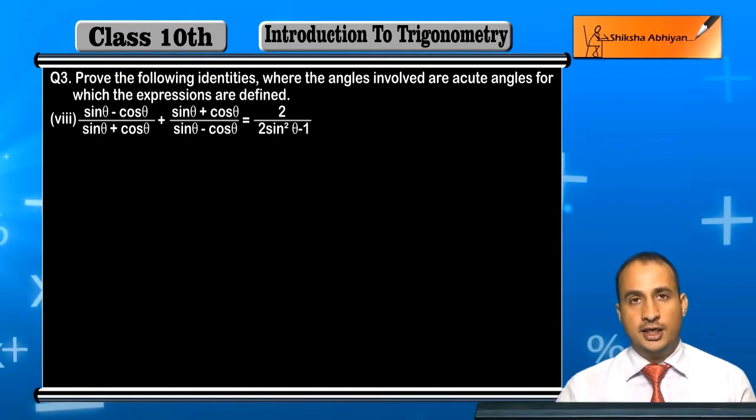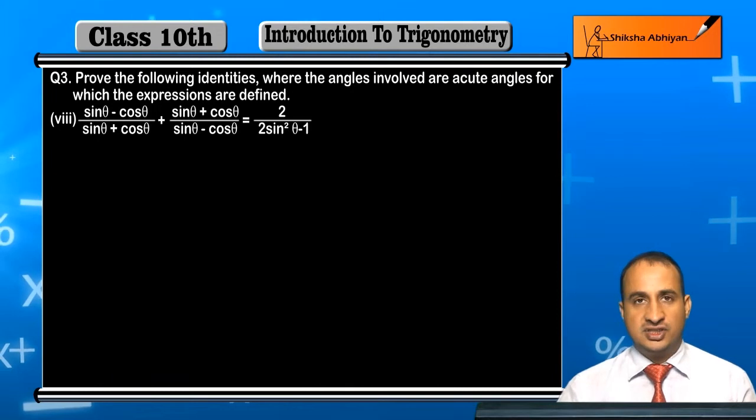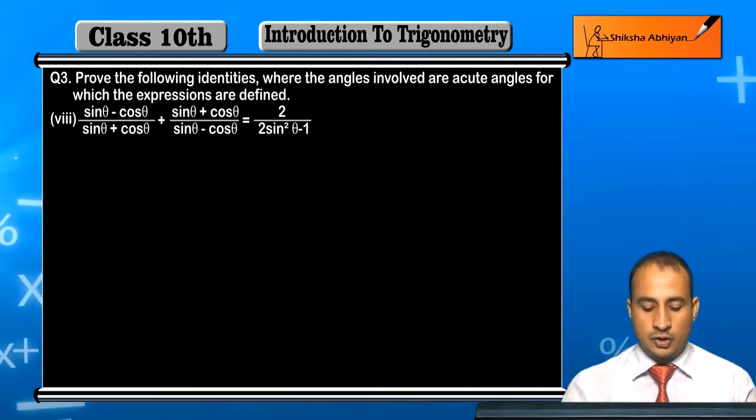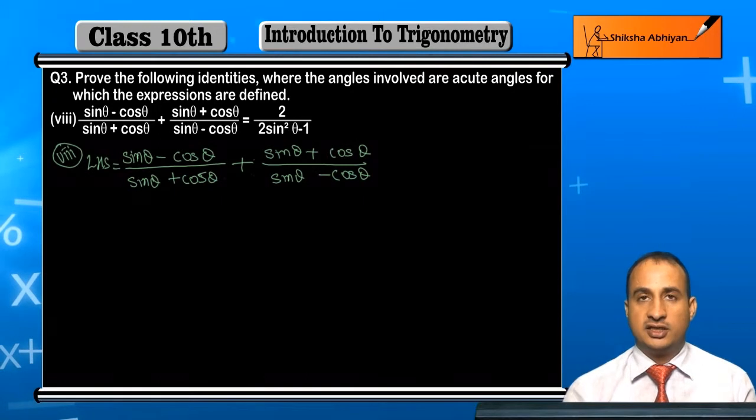Prove this equals 2 upon 2 sine square theta minus 1. So first of all, I will write down the left hand side. As you can see, I've written down the left side simply.